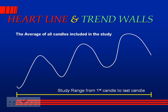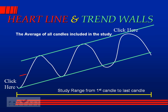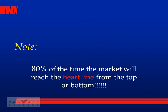Once we have one, two, three higher lows we know we have a trend, so we can use a heart line — or whatever trend tool you prefer — and click on the highs to get a channel. I like channels. Those trend walls — the outer green lines — are very important because the market respects them. Not respecting them is a very strong sign of a possible reversal.